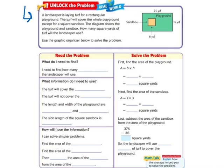So let me show you. A landscaper is laying turf for a rectangular playground. The turf will cover the whole playground, so the green part, except for the sandbox. That's the yellow part. So we don't want turf or grass in our sandbox. So that means we're probably going to have to subtract that sandbox.